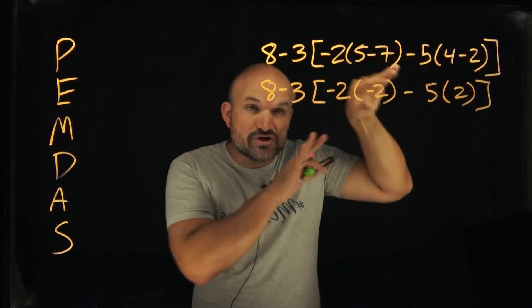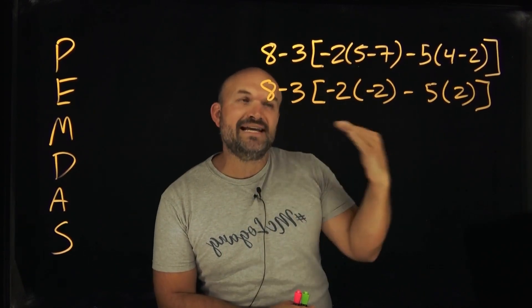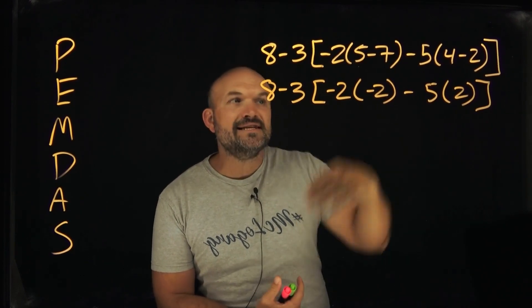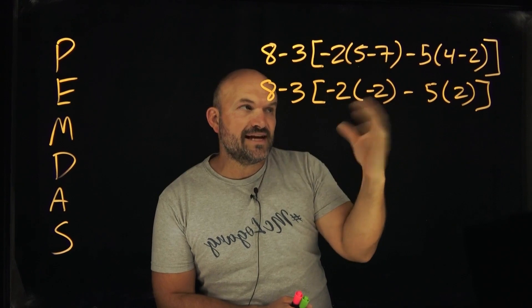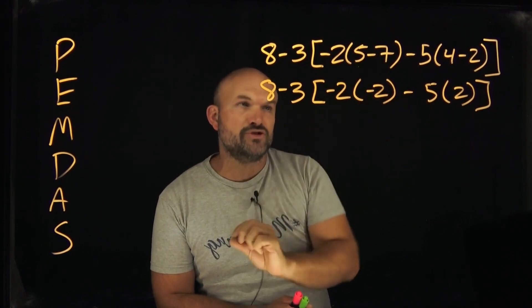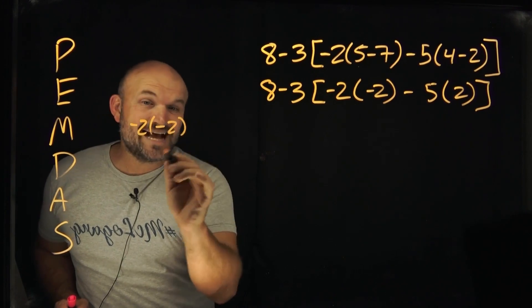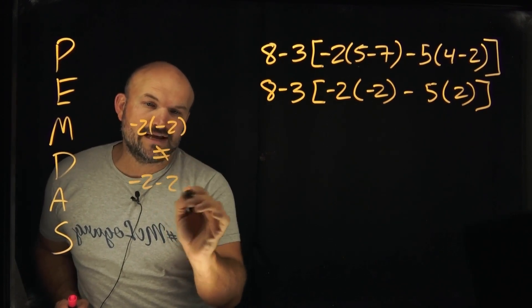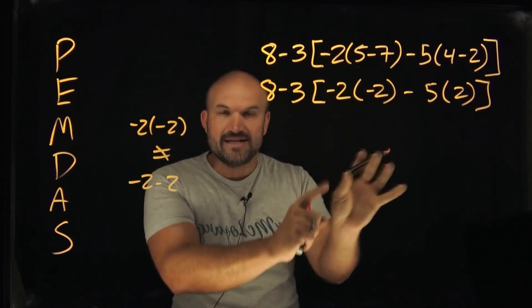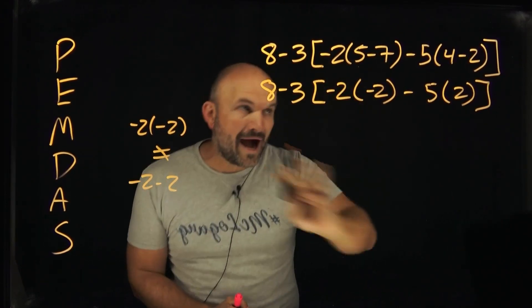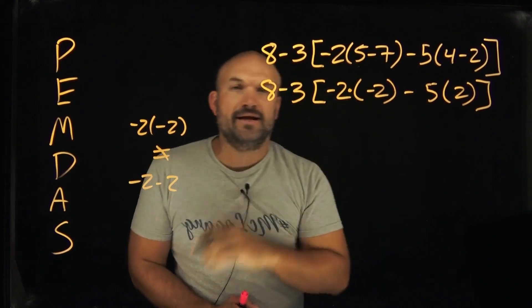One thing I want you to notice is I preserve the parentheses here. I only want you to be able to get rid of the parentheses once the operation has been resolved. In this case, all we simply did was we just simplified what was inside the parentheses. But in this case we still want to make sure we have that parentheses preserved. There's a big distinction here. Negative 2 times negative 2 is not the same thing as negative 2 negative 2. The parentheses matter here.